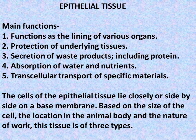Epithelial Tissue. Main functions: 1. Functions as the lining of various organs. 2. Protection of underlying tissues. 3. Secretion of waste products including protein. 4. Absorption of water and nutrients. 5. Transcellular transport of specific materials. The cells of the epithelial tissue lie closely side by side on a base membrane. Based on the size of the cell, the location in the animal body, and the nature of work, this tissue is of three types.